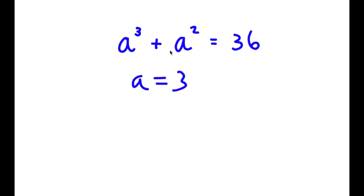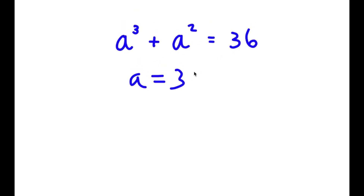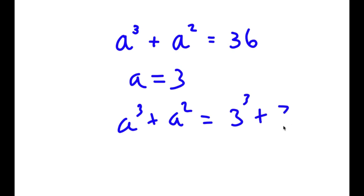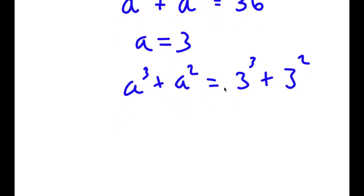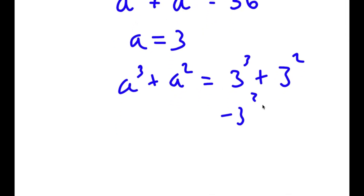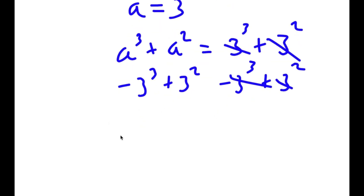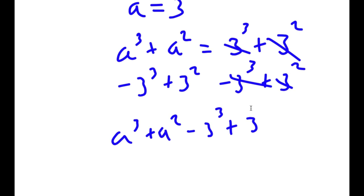Now that we've found one solution, we can use it. We can write a to the power of 3 plus a squared equals 3 to the power of 3 plus 3 squared, because we know a equals 3. Now I'm going to subtract 3 to the power of 3 plus 3 squared from both sides. These two cancel out, and I get a to the power of 3 plus a squared minus 3 to the power of 3 minus 3 squared is equal to 0.